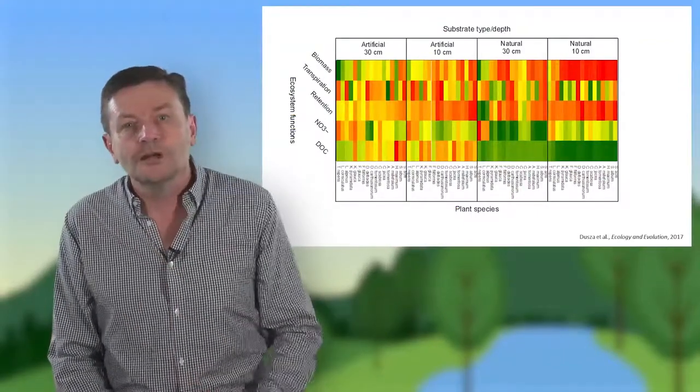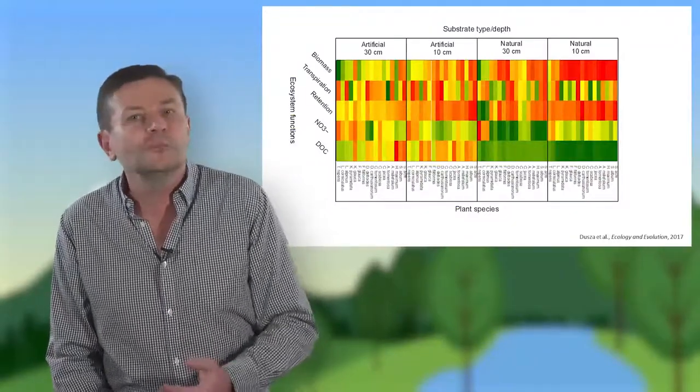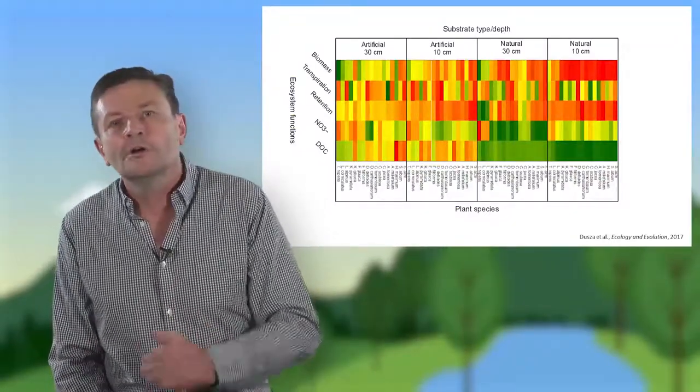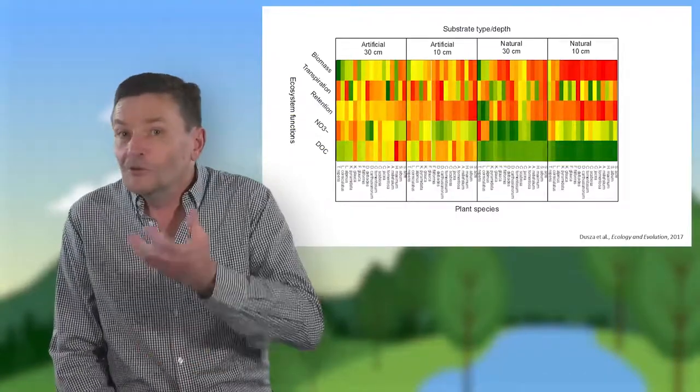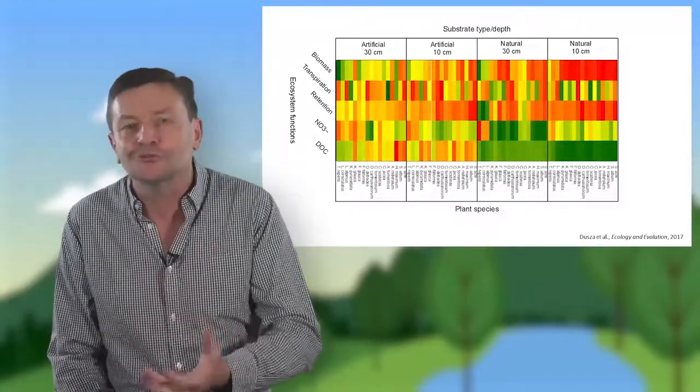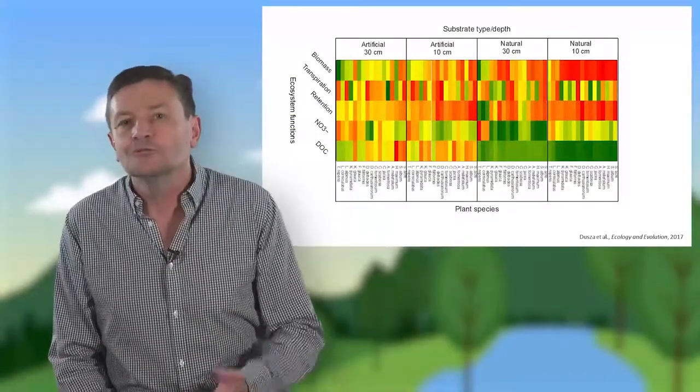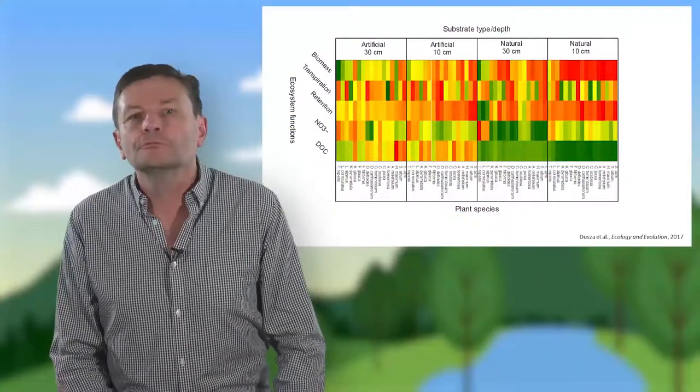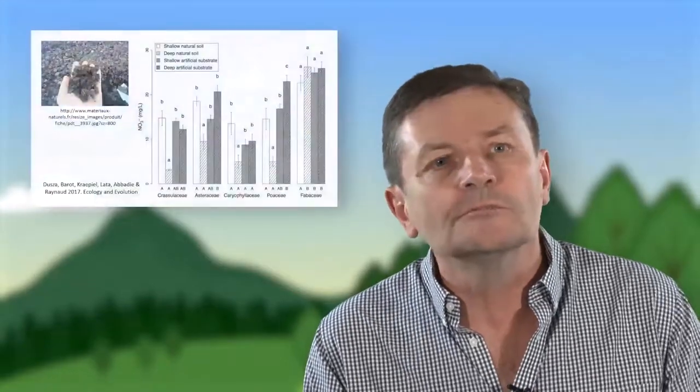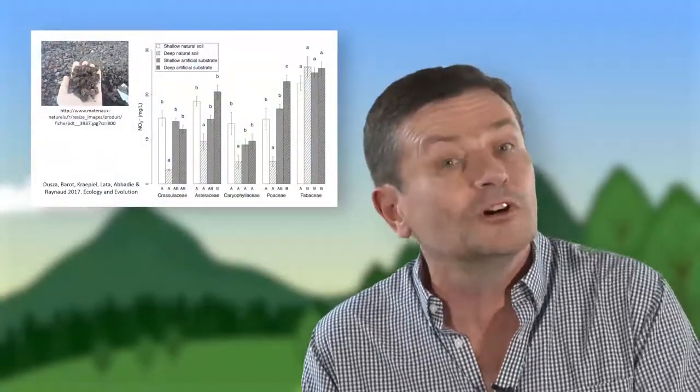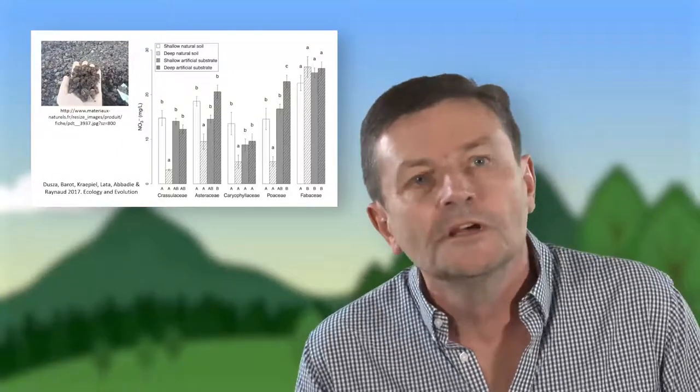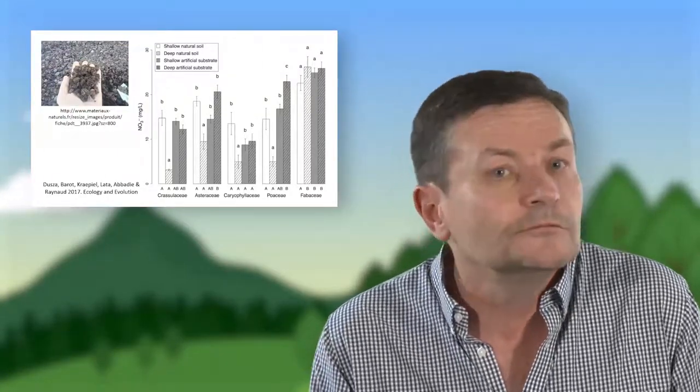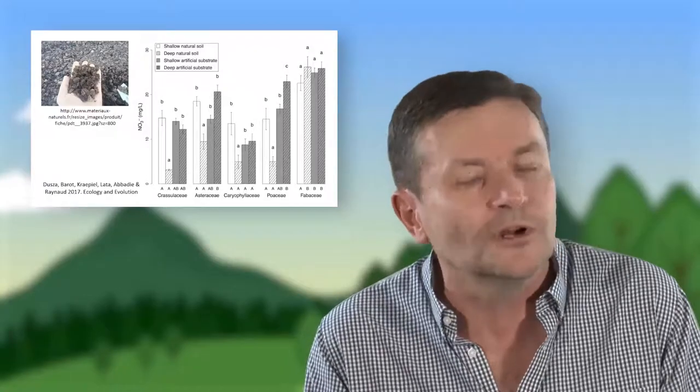Et sur ce schéma, cette combinaison de couleurs vous montre que lorsqu'une espèce est très performante sur une dimension, en général, elle l'est moins ailleurs, mais que cette réponse change en fonction de l'association dans laquelle elle se trouve, l'association végétale, ou change en fonction de cet environnement. Donc le vivant, c'est un outil, mais qui a quand même une certaine variabilité, et qui peut avoir des effets négatifs. Par exemple ici, la production de nitrates, donc une biodiversité, elle a aussi des effets qui ne nous arrangent pas.